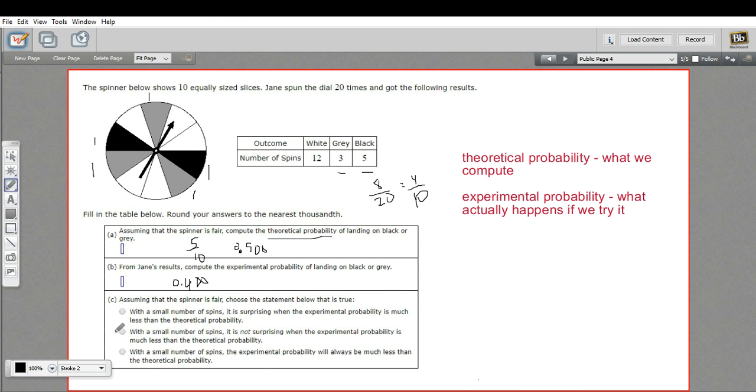The second one says, with a small number of spins, it is not surprising when the experimental probability is much less than the theoretical probability. It's not surprising to me. I'm going to check that one. But let's read the third one just to see.